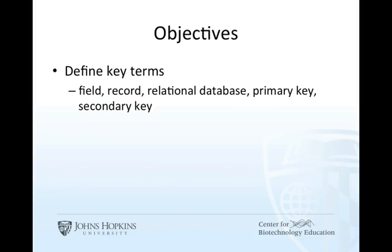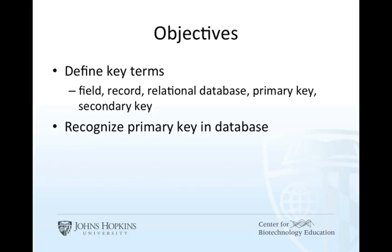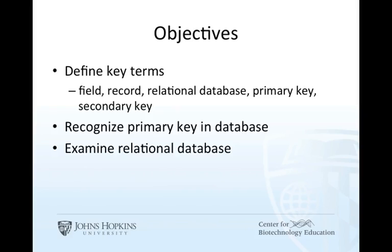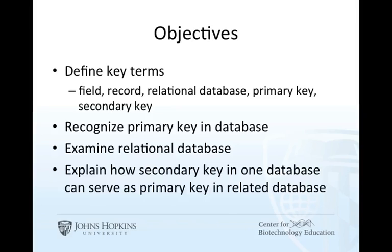After viewing this lecture, we should be able to define some terms, such as field, record, relational database, as well as primary and secondary key. Be able to find a primary key when you look at a database — it's usually an identifier, a series of numbers or letters, not data. Look at the setup of a relational database, which is a series of linked databases. Finally, explain how a secondary key in one database can serve as the primary key in another, usually a linked database.